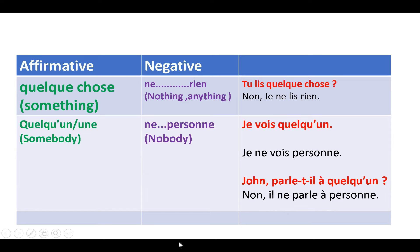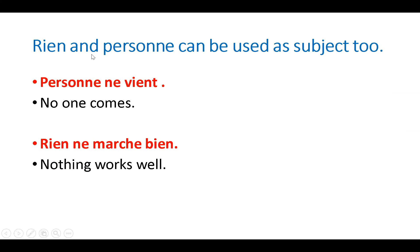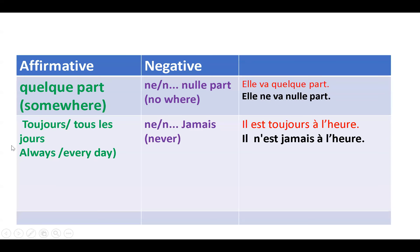Both 'rien' and 'personne' can also be used as the subject of a sentence. For example, 'no one comes' — 'personne ne vient.' Similarly, 'nothing works well' — 'rien ne marche bien.' So 'rien ne marche bien' and 'personne ne vient': in these cases rien and personne are placed at the start as subjects.